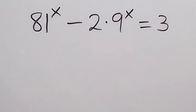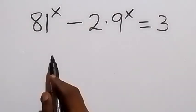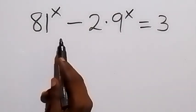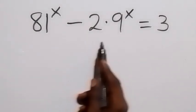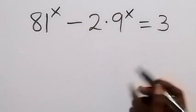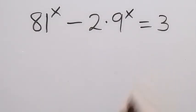Hello, you are welcome. How to solve this math Olympiad problem? 81 raised to power x minus 2 times 9 raised to power x equals to 3.